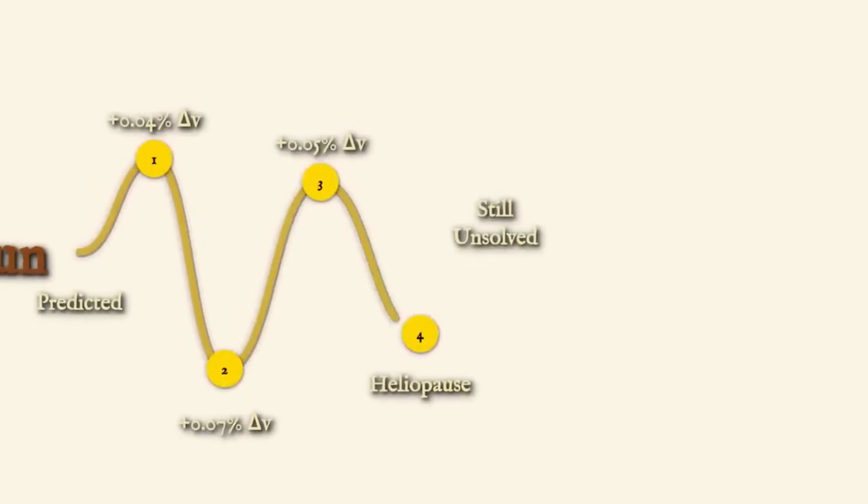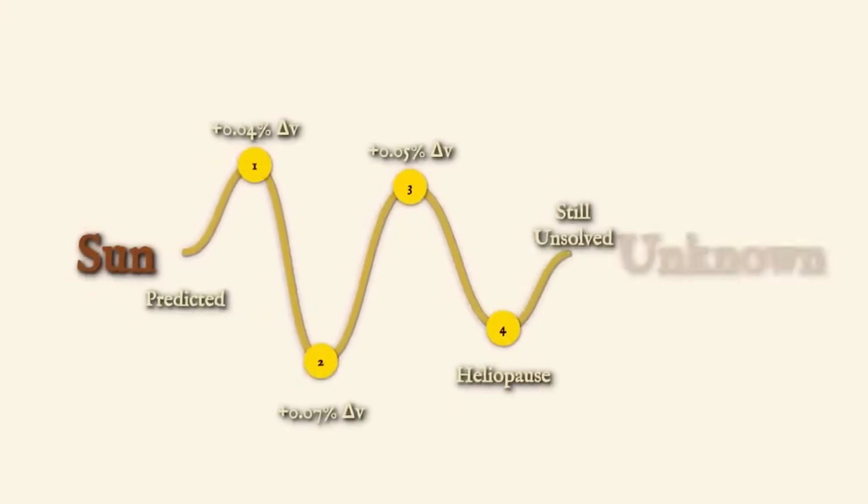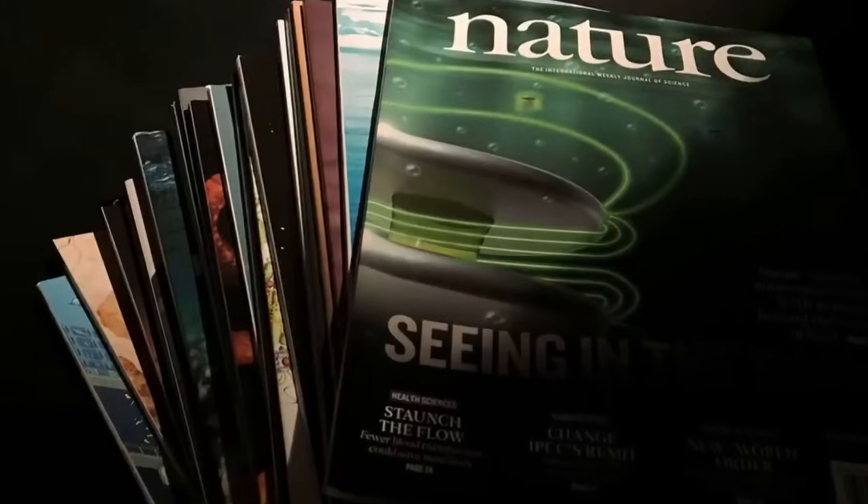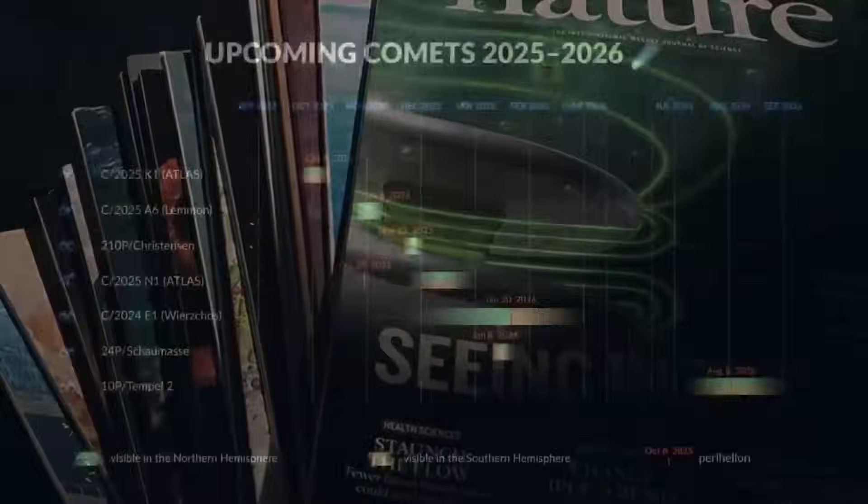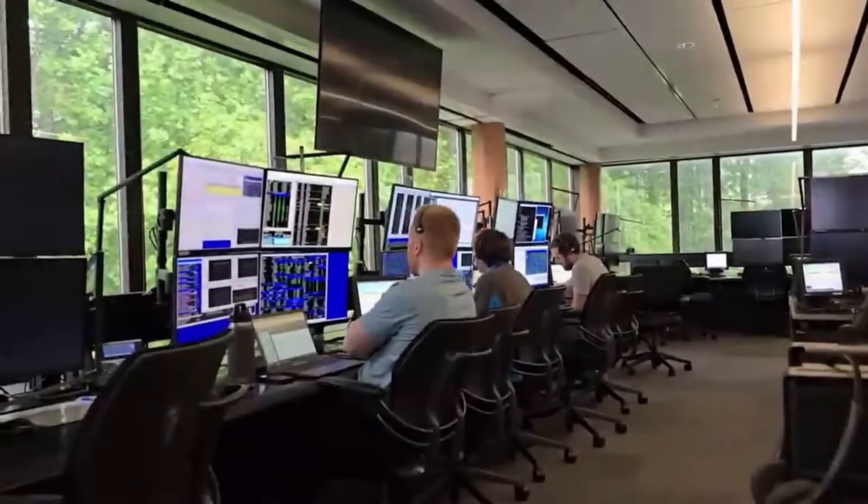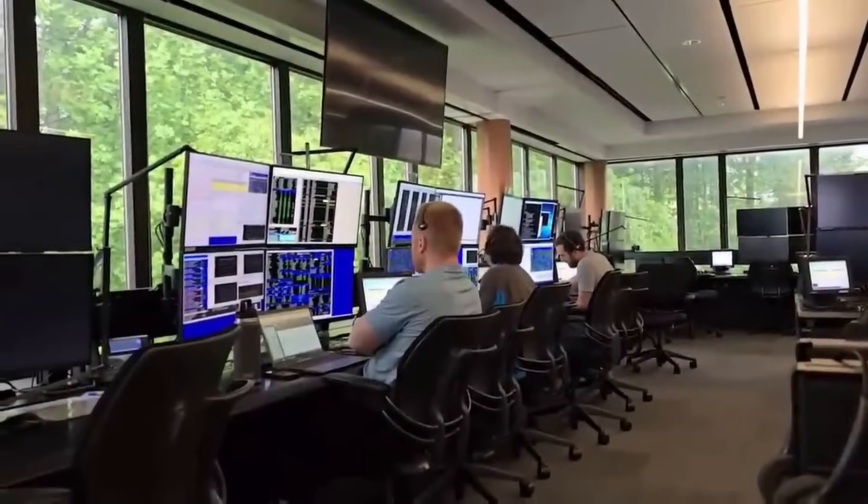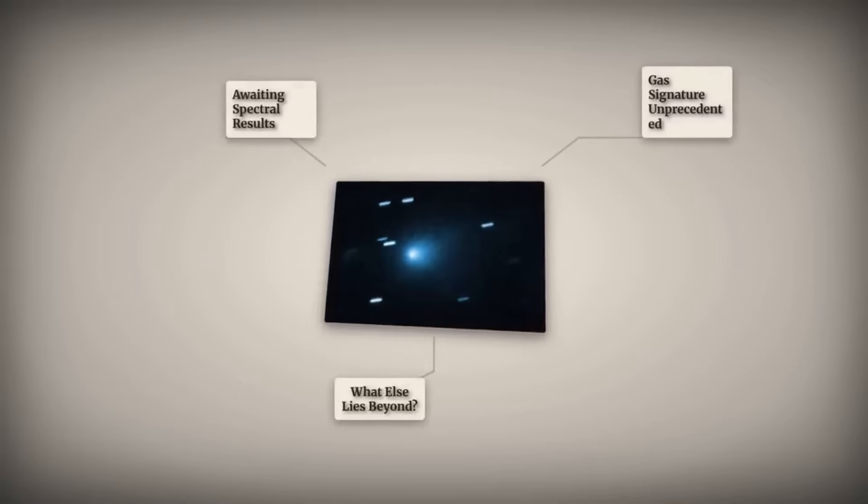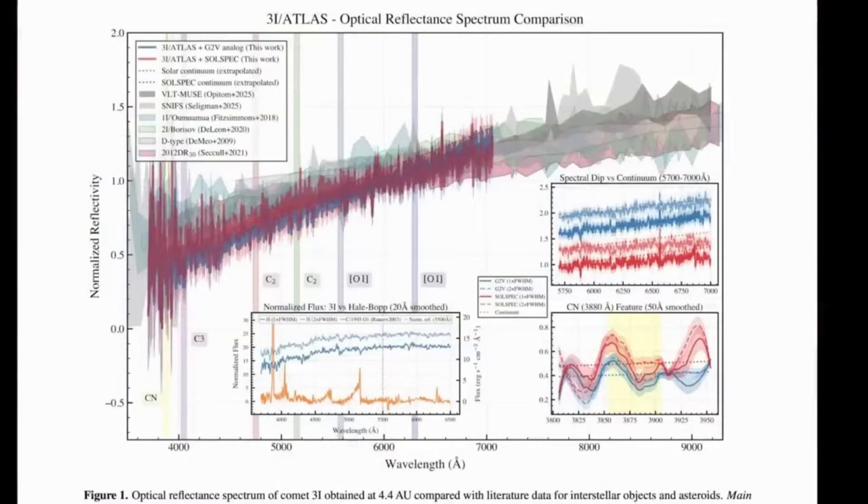Until those results arrive, 3I/Atlas stands as proof that not all visitors from the space between the stars fit our expectations. Each new interstellar object that enters our solar system teaches us something different about the universe. Oumuamua showed us that some objects can accelerate without any visible cause. Borisov reassured us that some visitors behave exactly as we expect them to. And now 3I/Atlas is forcing us to question our most basic assumptions about the chemistry of comets and the diversity of objects that exist in the cosmos.